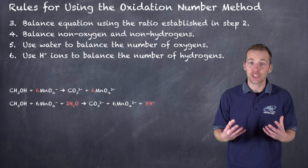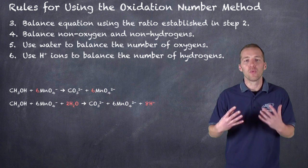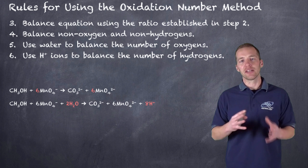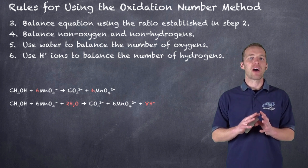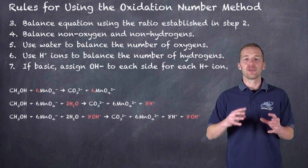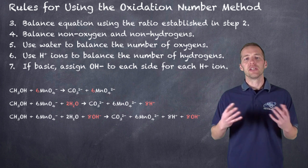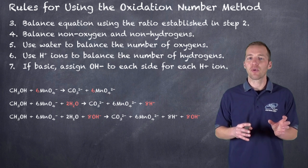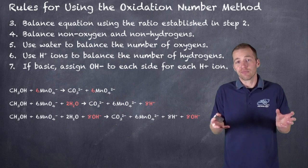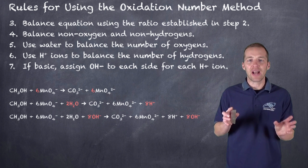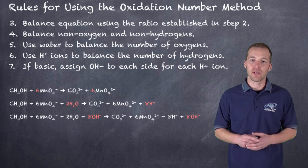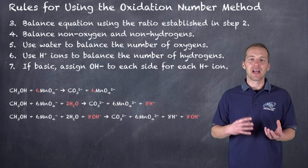Once we add the water, we add hydrogen ions. Keep in mind: even though this is a basic solution, we still go through this process — this is the method we use to balance it, not necessarily how the reaction occurs. After adding H⁺ to balance the total number of hydrogens in the equation, since it's a basic solution, we then assign hydroxide ions to each side of the reaction to balance out those hydrogen ions.